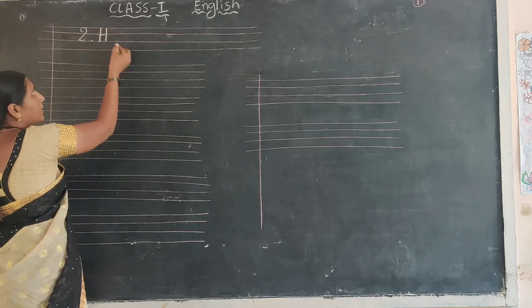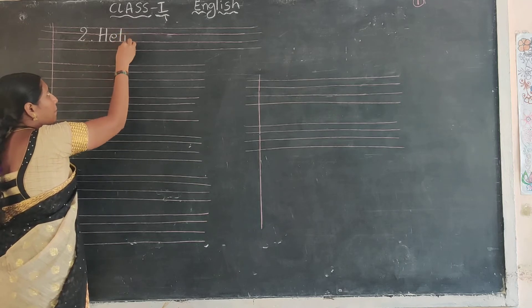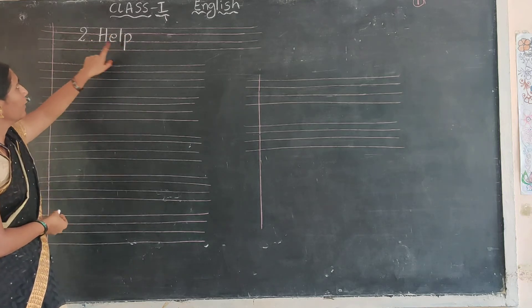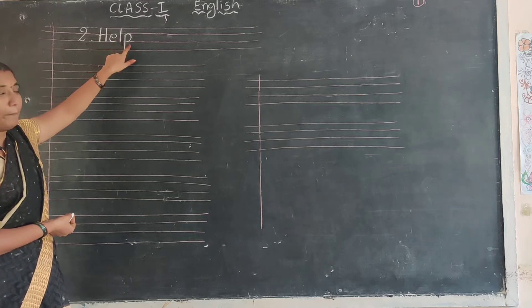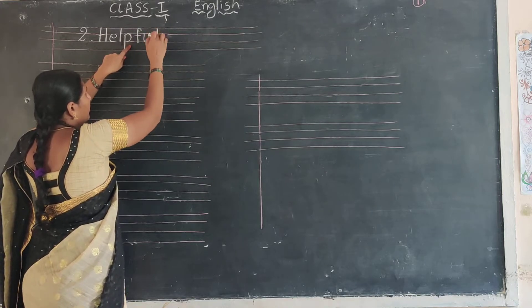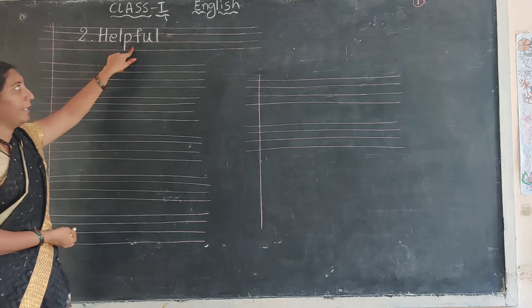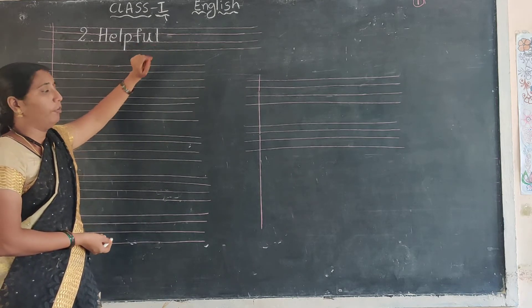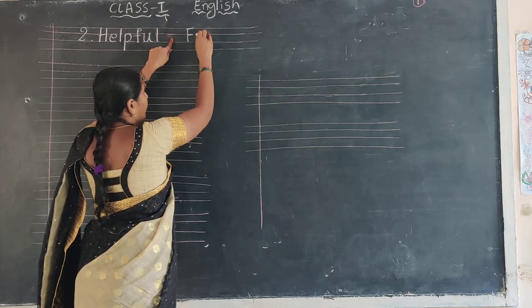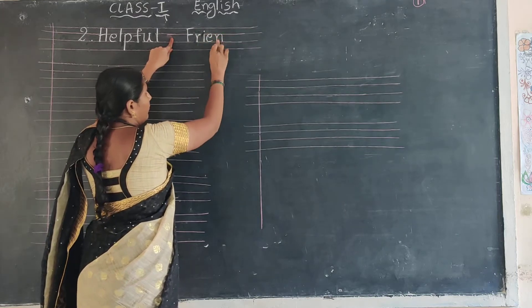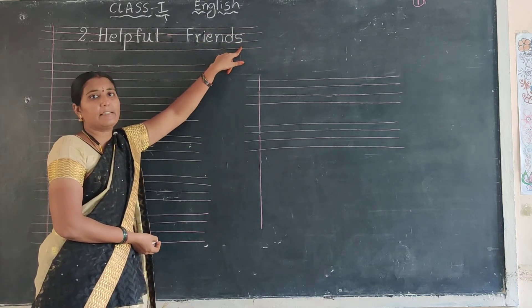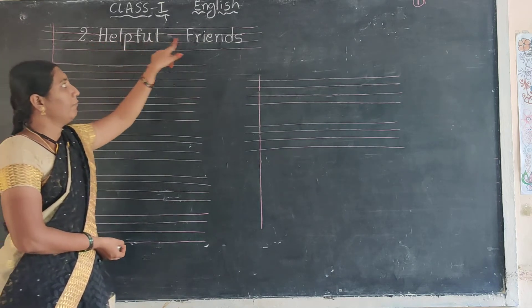Capital letter H. H-E-L-P. Help. F-U-L. Full. Helpful. H-E-L-P, Help. F-U-L, Full. Helpful. Friends. F-R-I-E-N-D-S. Friends. The lesson name is Helpful Friends.